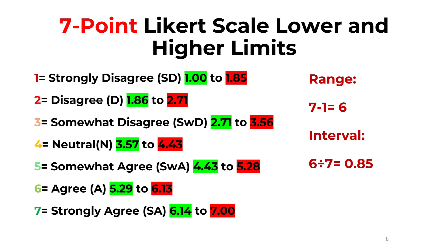For rank one, the range is 1.00 to 1.85, which corresponds to strongly disagree. For rank two, 1.86 to 2.71 corresponds to disagree. For rank three, 2.71 to 3.56 corresponds to somewhat disagree.